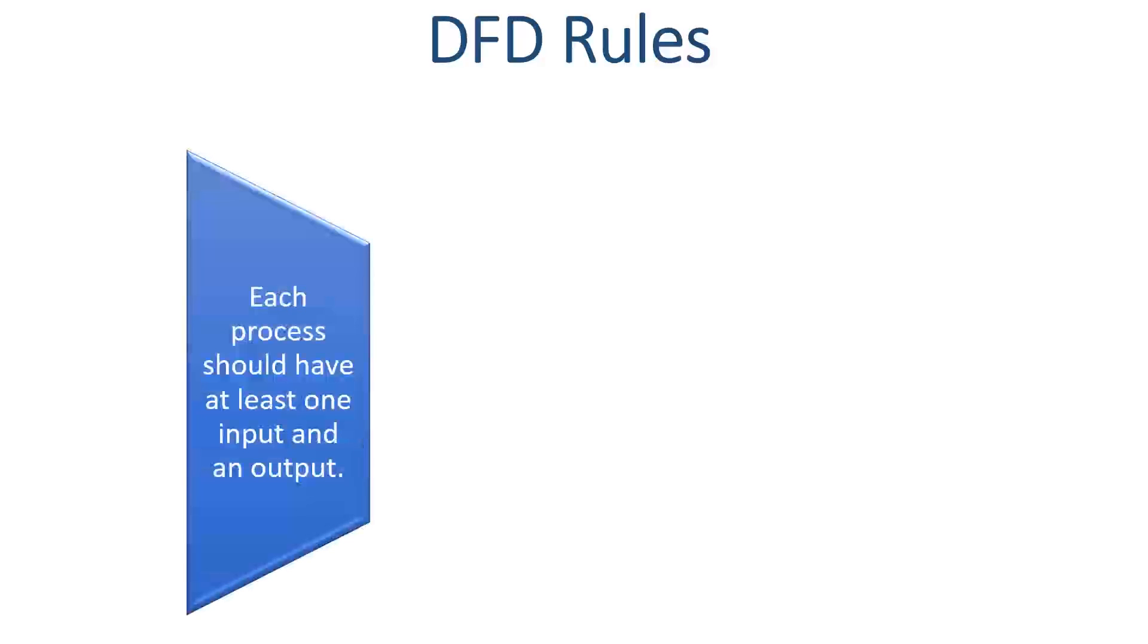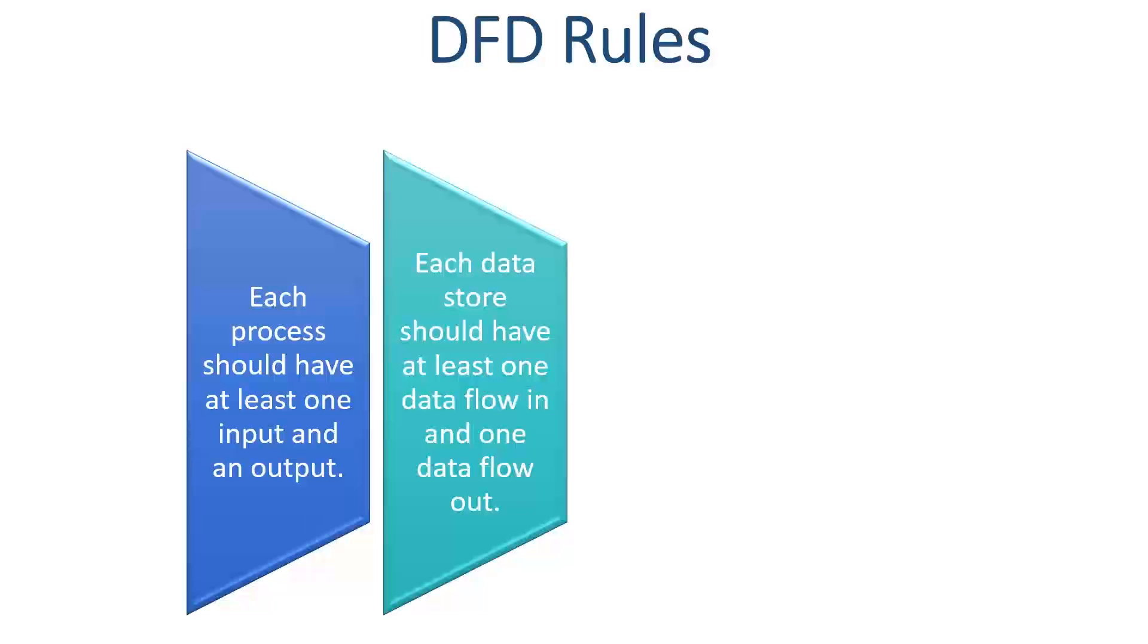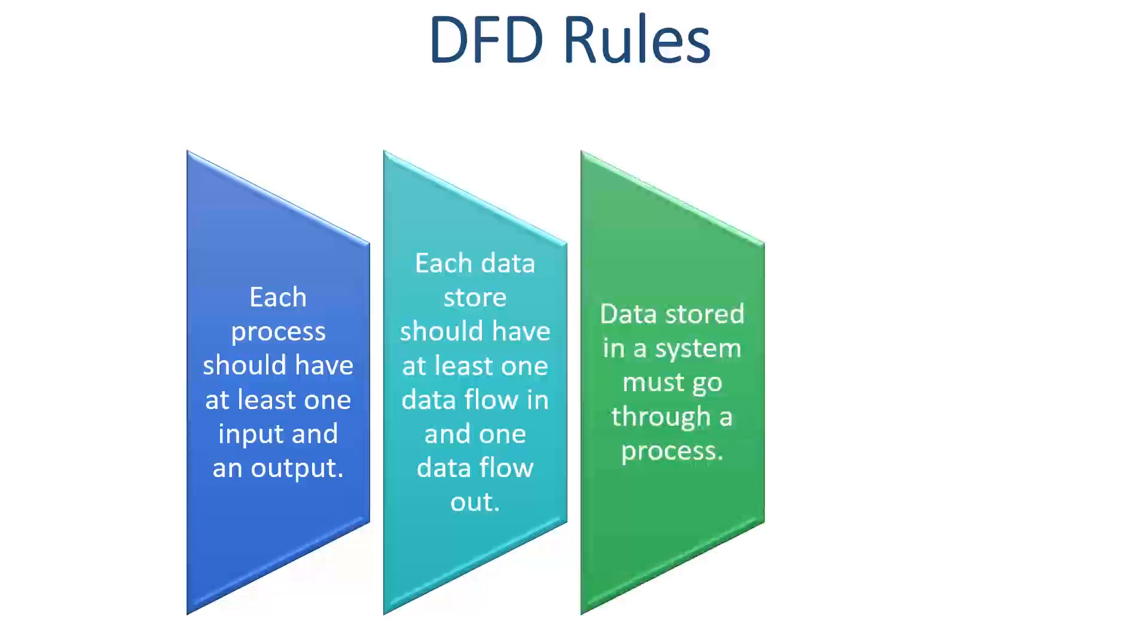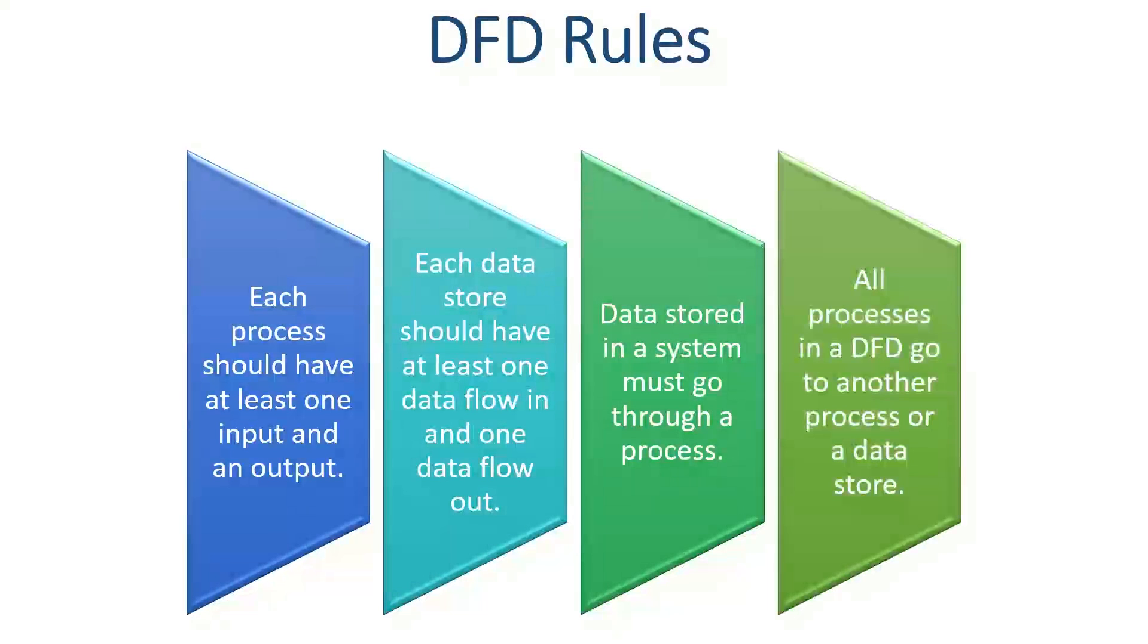First, each process should have at least one input and one output. Also, each data store should have at least one data flow in and one data flow out. Data stored in a system must go through a process. And all processes in a DFD lead to another process or a data store.